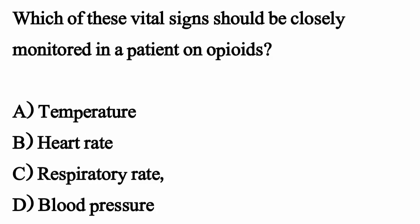Which of these vital signs should be closely monitored in a patient on opioids? The correct option is option C: Respiratory rate.